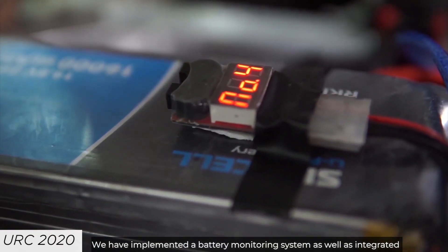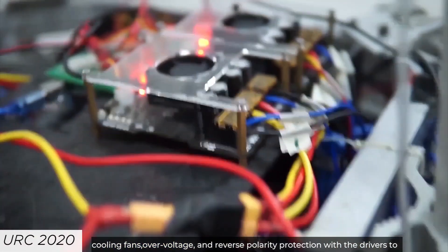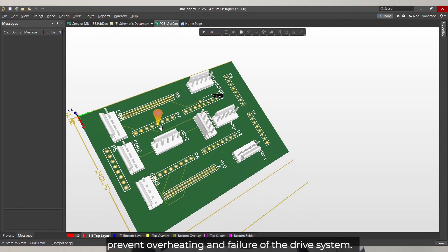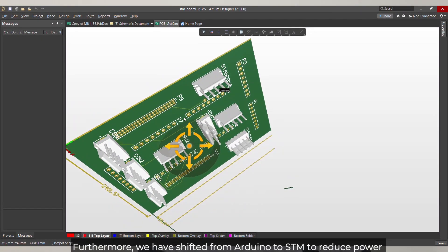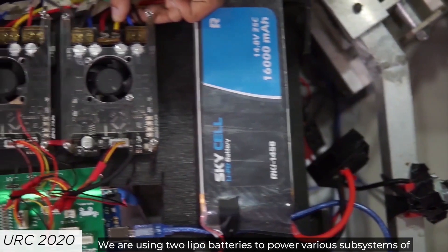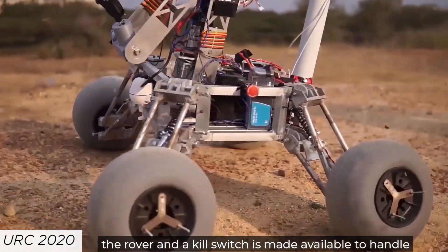We have implemented a battery monitoring system as well as integrated cooling fans, over voltage and reverse polarity protection with the drivers to prevent overheating and failure of the drive system. Furthermore, we have shifted from Arduino to STM to reduce power consumption and achieve faster computation. We are using two LiPo batteries to power various subsystems of our rover and a kill switch is made available to handle unexpected system failure.